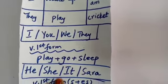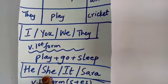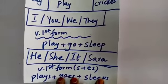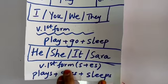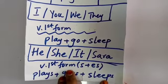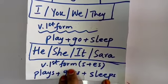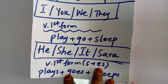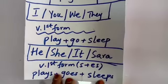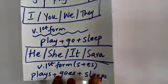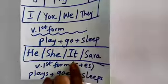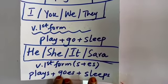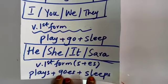Now the formula for affirmative sentences: when we have a singular subject — he, she, it, Sarah, Ali, any one name — we use the verb's first form with 's' or 'es' added. For example: 'He plays cricket', 'She goes to school', 'The cat sleeps at night.'